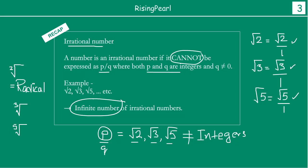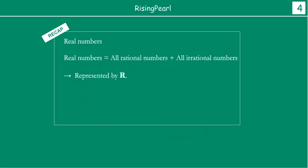Now, friends, you will notice that real numbers are nothing but a collection of all rational numbers and all irrational numbers. Both sets are infinite, and if somehow we add them together into one collection, that collection is what we call real numbers. Real numbers, friends, are represented by the uppercase letter R.